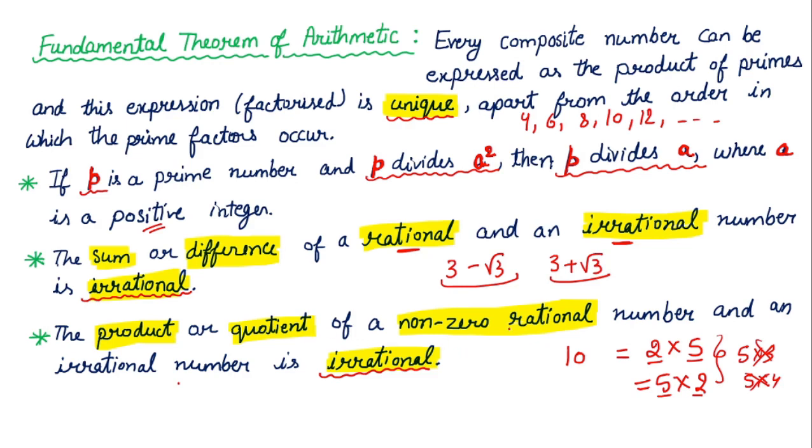Next point. The product or quotient of a non-zero rational number and an irrational number is irrational. If we take a non-zero rational number and an irrational number, it will also be irrational. If we take 4 root 3, it is irrational. The product, the quotient, the sum, and the difference will always be irrational.